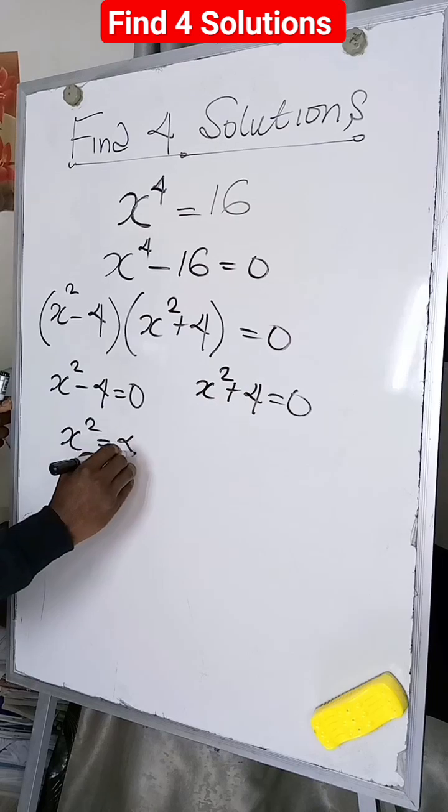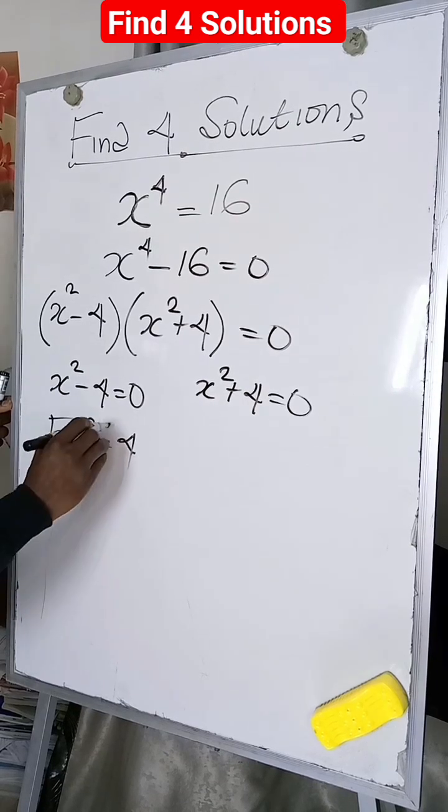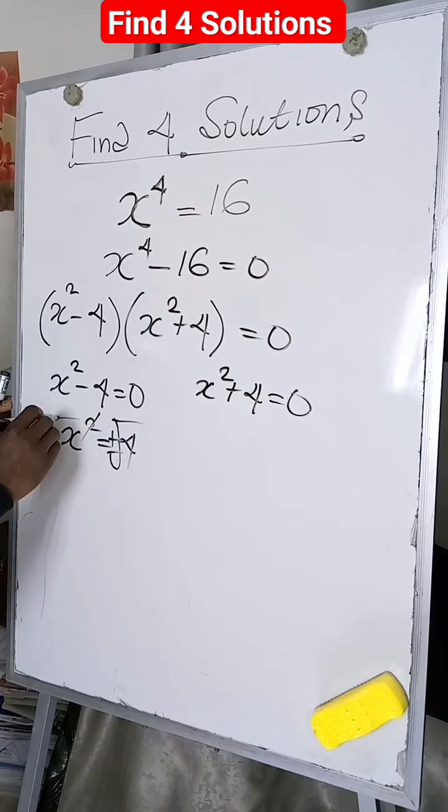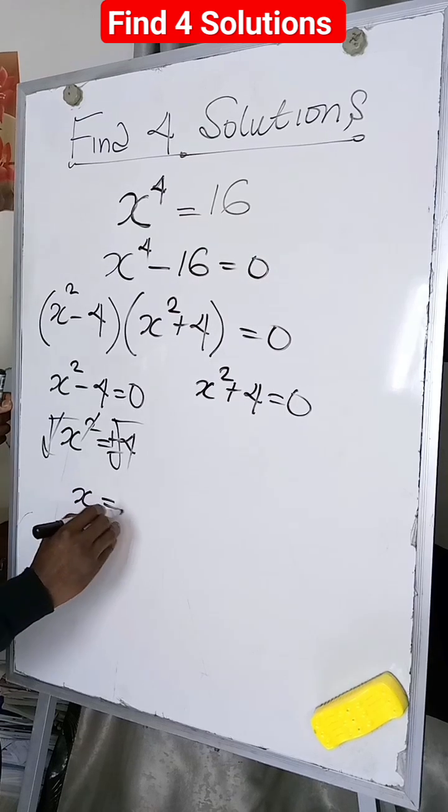With this equation we'll have x squared equal to 4. If we take the square root of both sides, x will be equal to plus or minus 2.